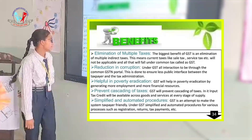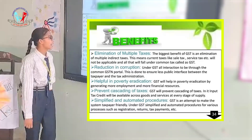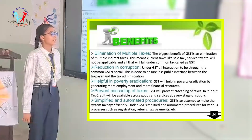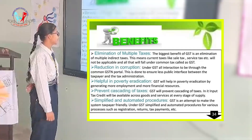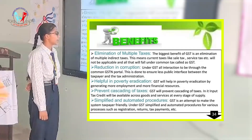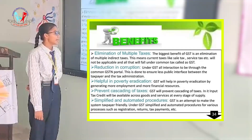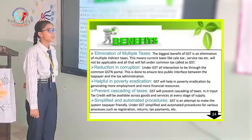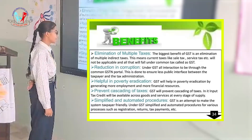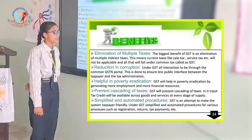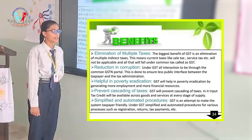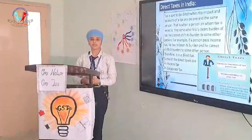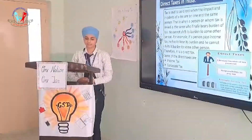The fifth benefit is simplified and automated procedures. GST is an attempt to make the system taxpayer-friendly. Under GST, simplified and automated procedures are available for various processes such as registration, returns, and tax payments. Now let's talk about direct and indirect taxes.